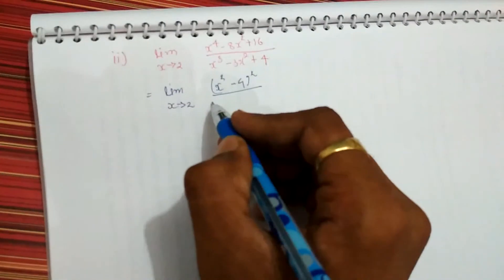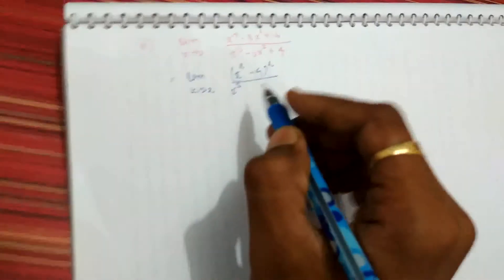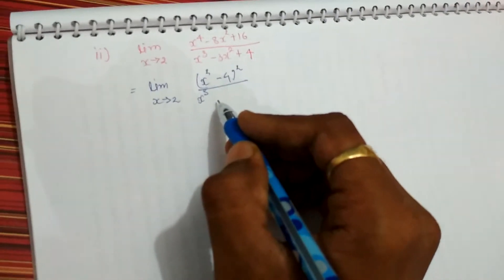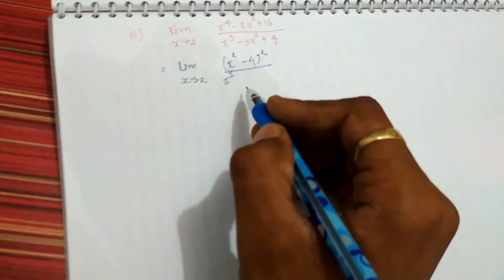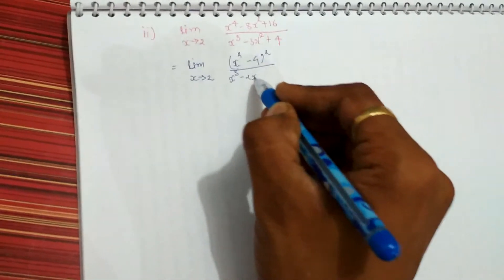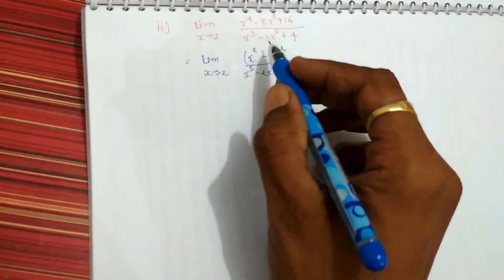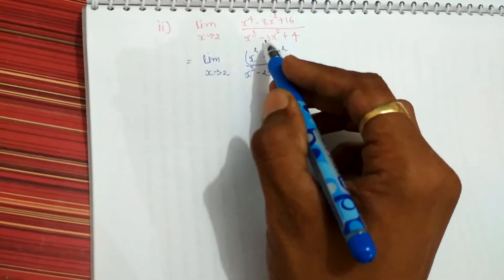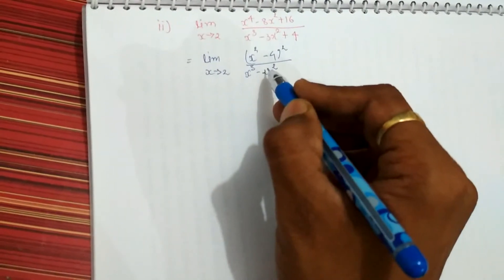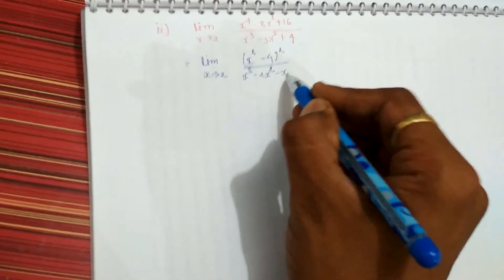Now, to factorize this denominator term, first of all write x cube. Now, which term should I take so that I will get x minus 2 as one common factor? So it will be minus 2x square, right? As I have taken minus 2x square, but here it is minus 3x square. So what term should be added to minus 2x square to make minus 3x square? That is minus x square.